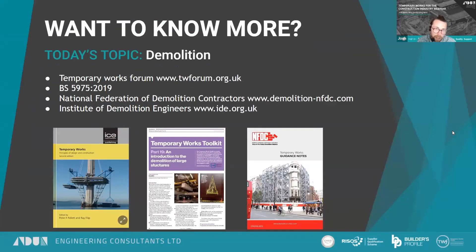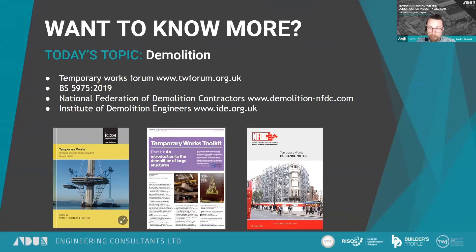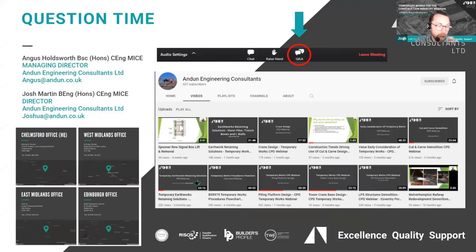There is a host of information available beyond this presentation. Key resources include the Temporary Works Forum with free downloads, BS5975:2019 — effectively the bible for temporary works and still current, not superseded by Euronorms — and the NFDC temporary works document, updated to the 2019 version, which is a free download and a good concise read covering all the salient points. Questions will now be taken.